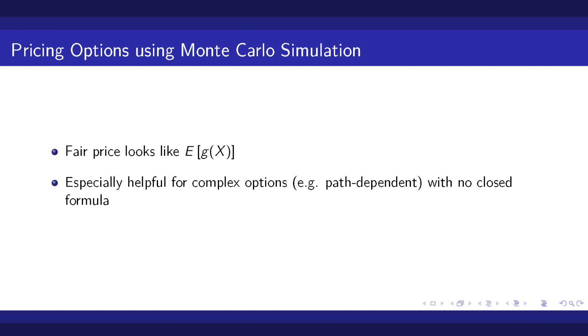for example path-dependent options like American or Asian options. An American option can be exercised at any point during its lifetime and the payoff of the Asian option is determined by the average stock price over a certain period of time. In both cases, we actually have to simulate the whole path of the underlying stock to price the option. For this video, we show the pricing of a European call option to illustrate the general concept of Monte Carlo simulation and option pricing.